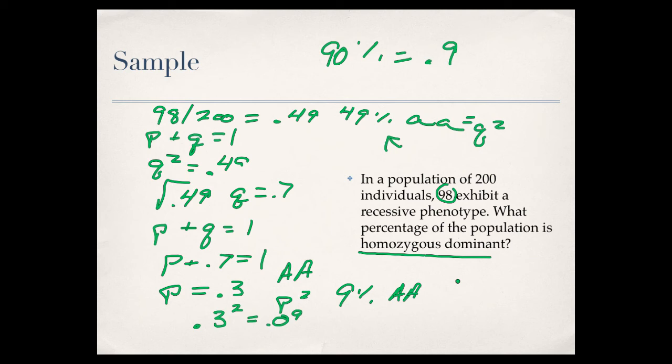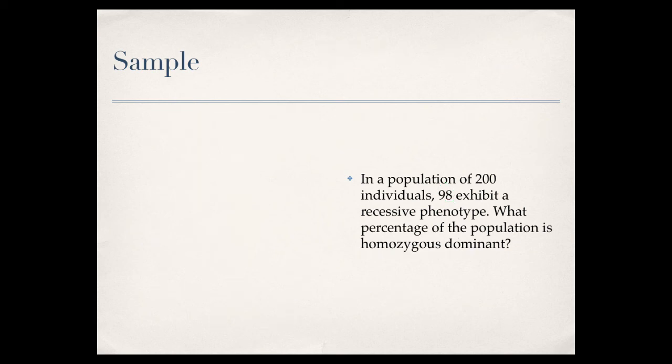So, now, if we wanted to know the heterozygous condition, there are two ways we can do this. We said that we know that 49% are aa. We know that 9% are AA. So, if we want to know how many are heterozygous, two ways to do this. One, you could do simple math. Just add 49 plus 9 and then subtract that from 100, and that would tell you how many are heterozygous, because you've got to equal 100%.